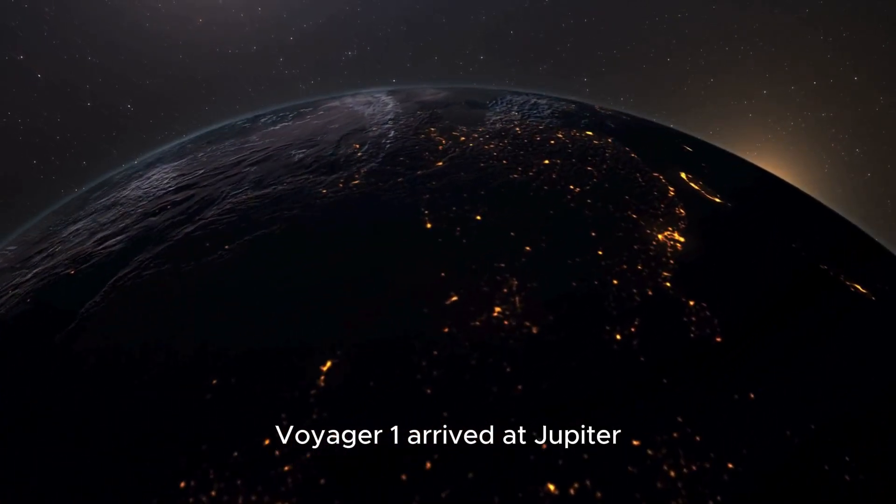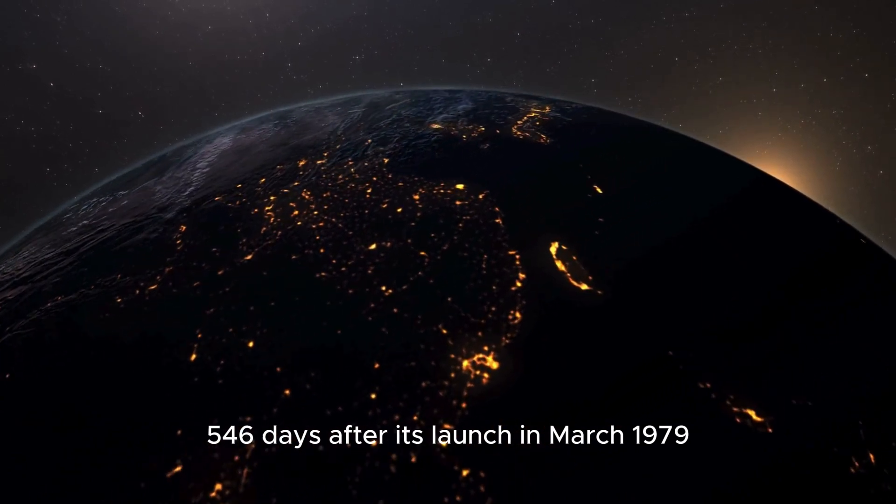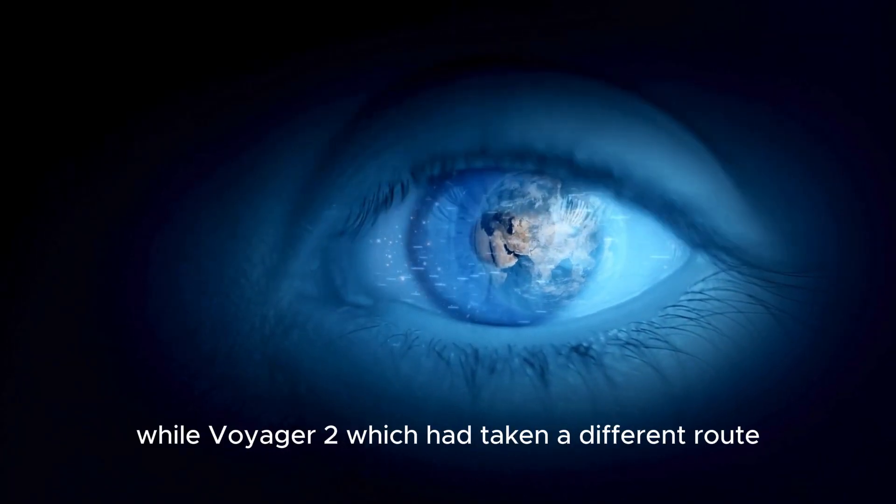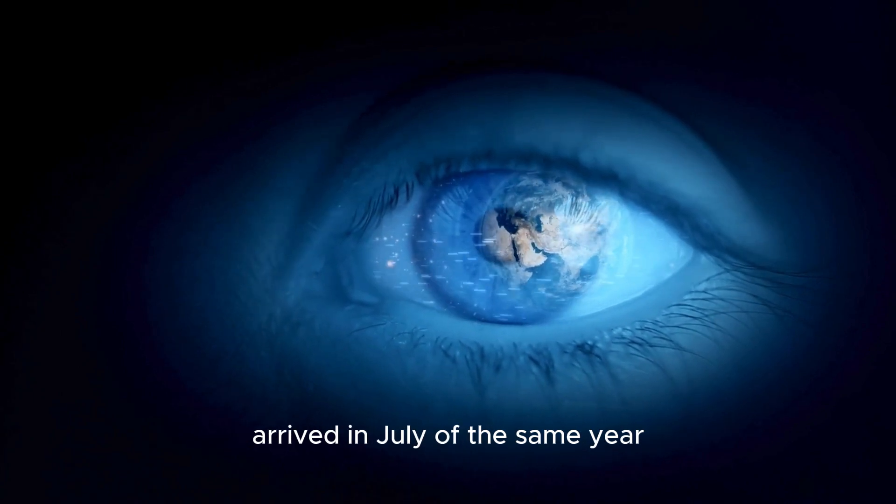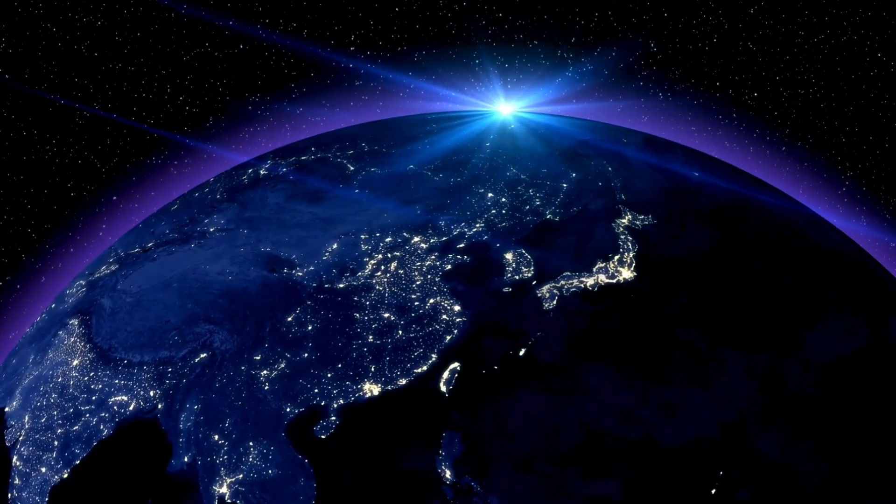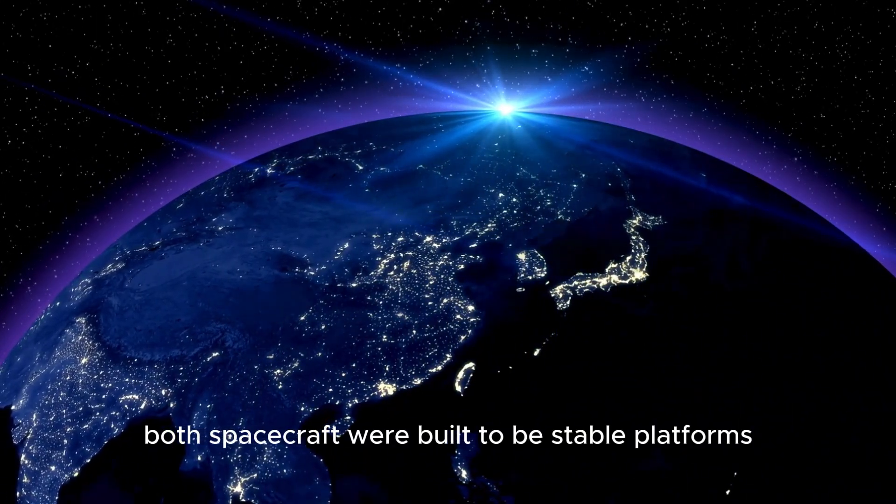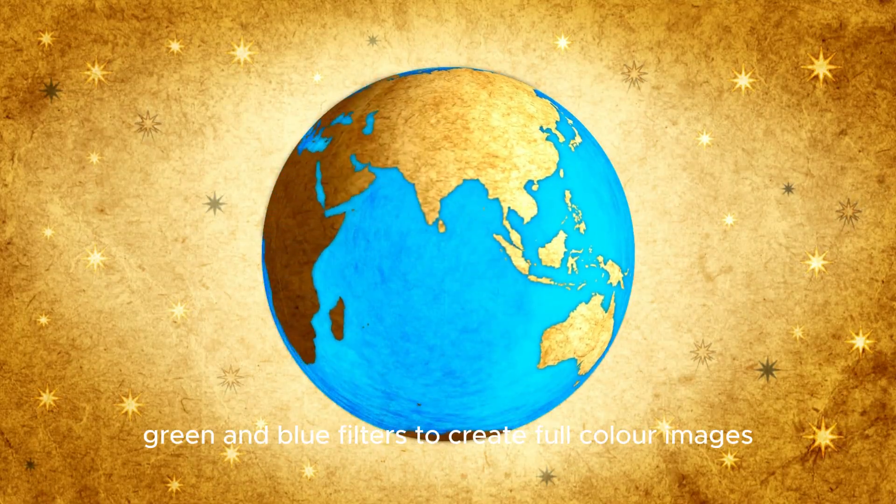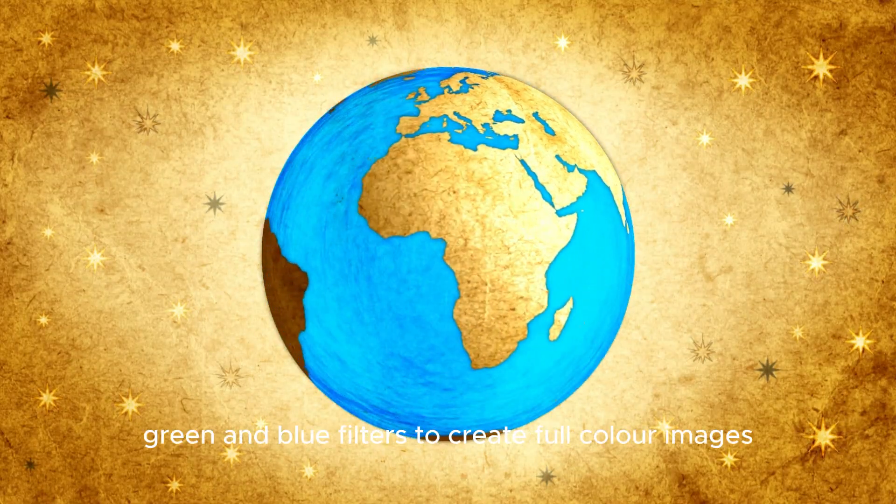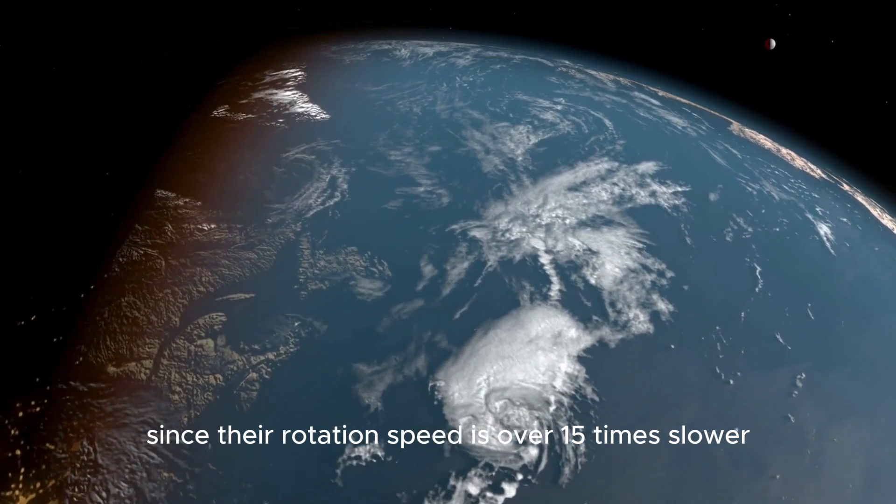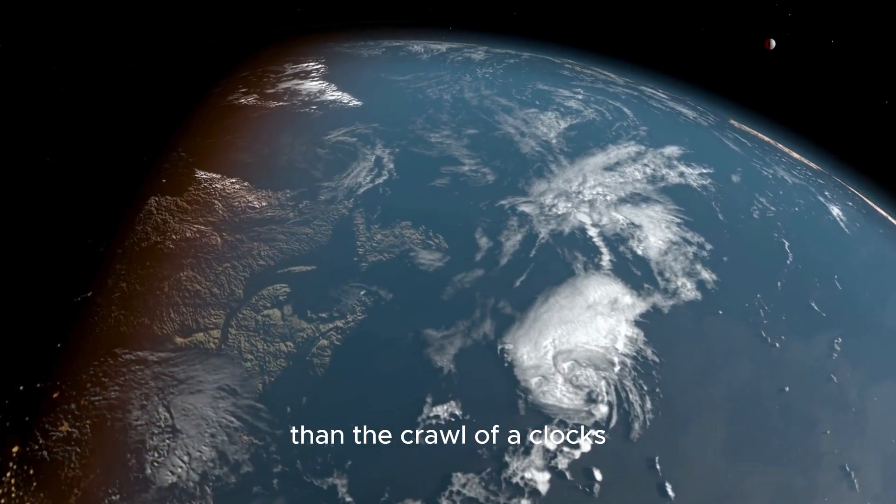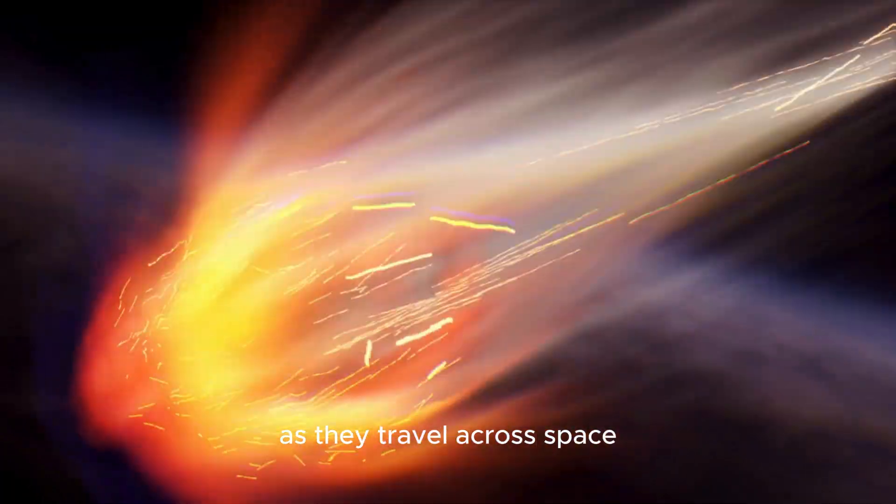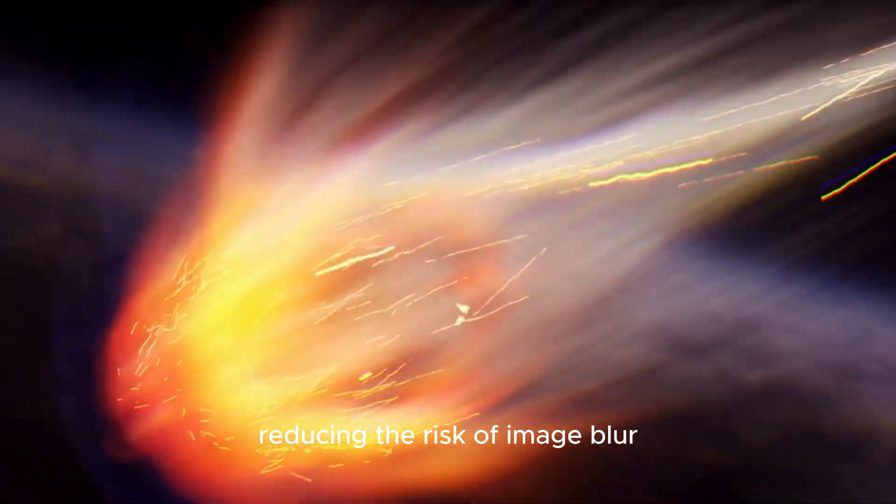Voyager 1 arrived at Jupiter 546 days after its launch in March 1979, while Voyager 2, which had taken a different route, arrived in July of the same year. Both spacecraft were built to be stable platforms for their Vidicon cameras, which used red, green, and blue filters to create full-color images. Since their rotation speed is over 15 times slower than the crawl of a clock's hour hand, the spacecraft hardly spin at all as they travel across space, reducing the risk of image blur.